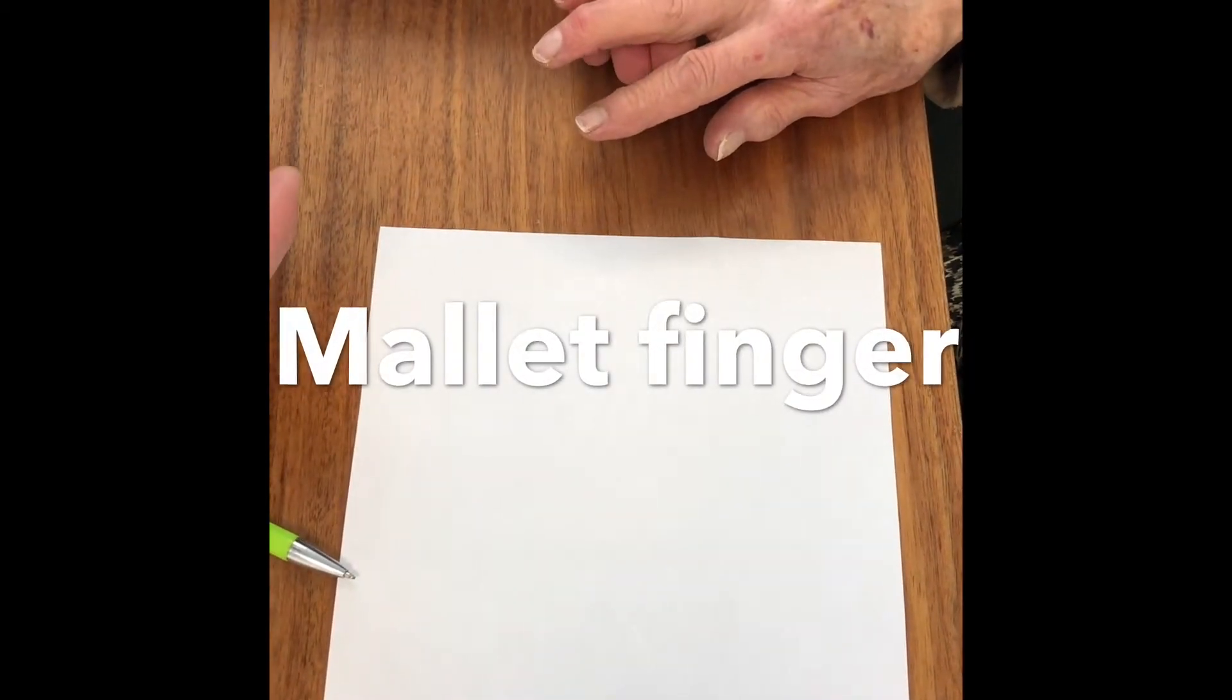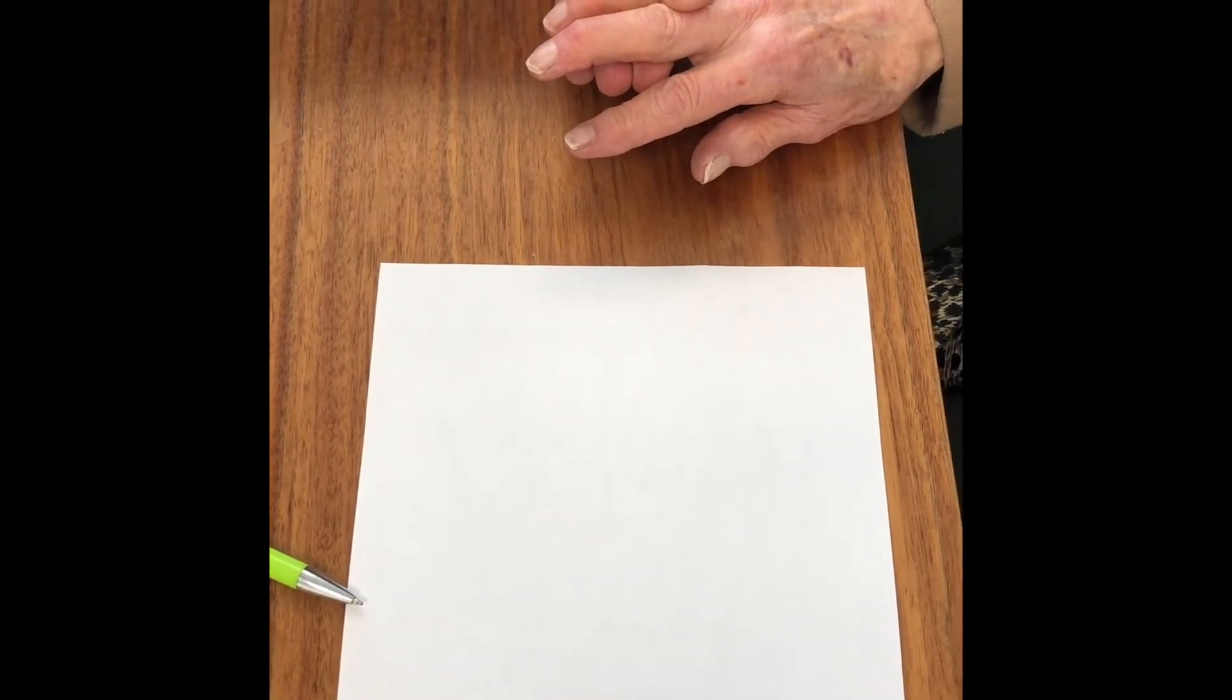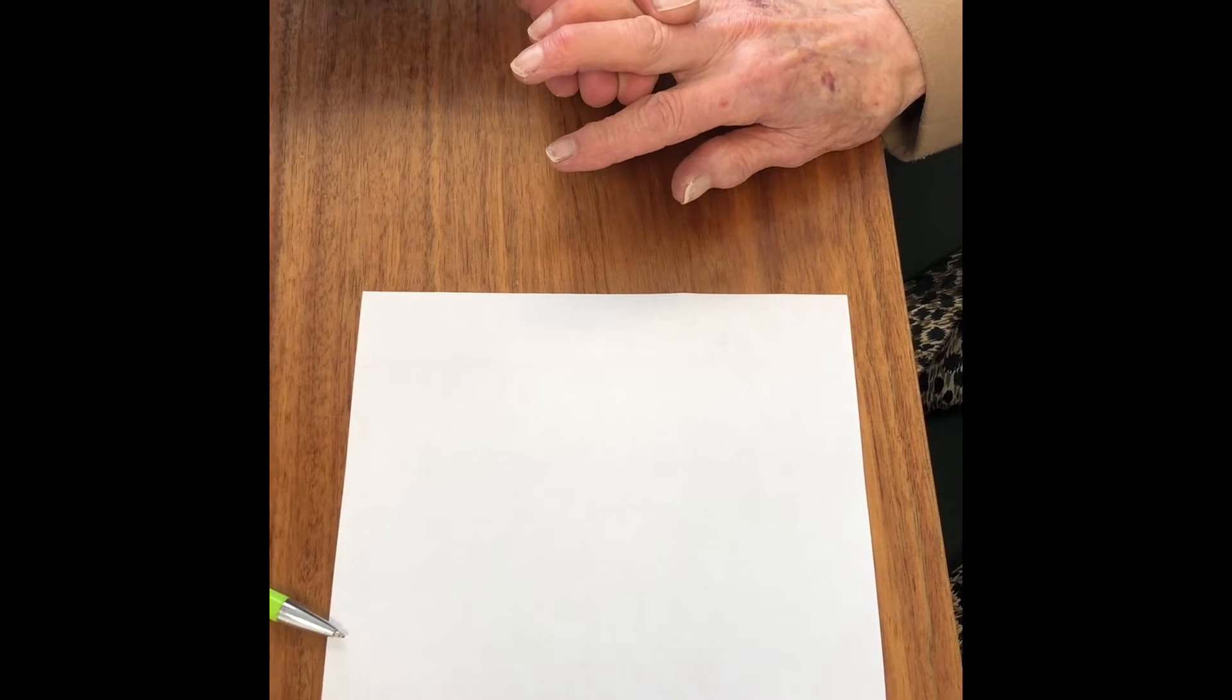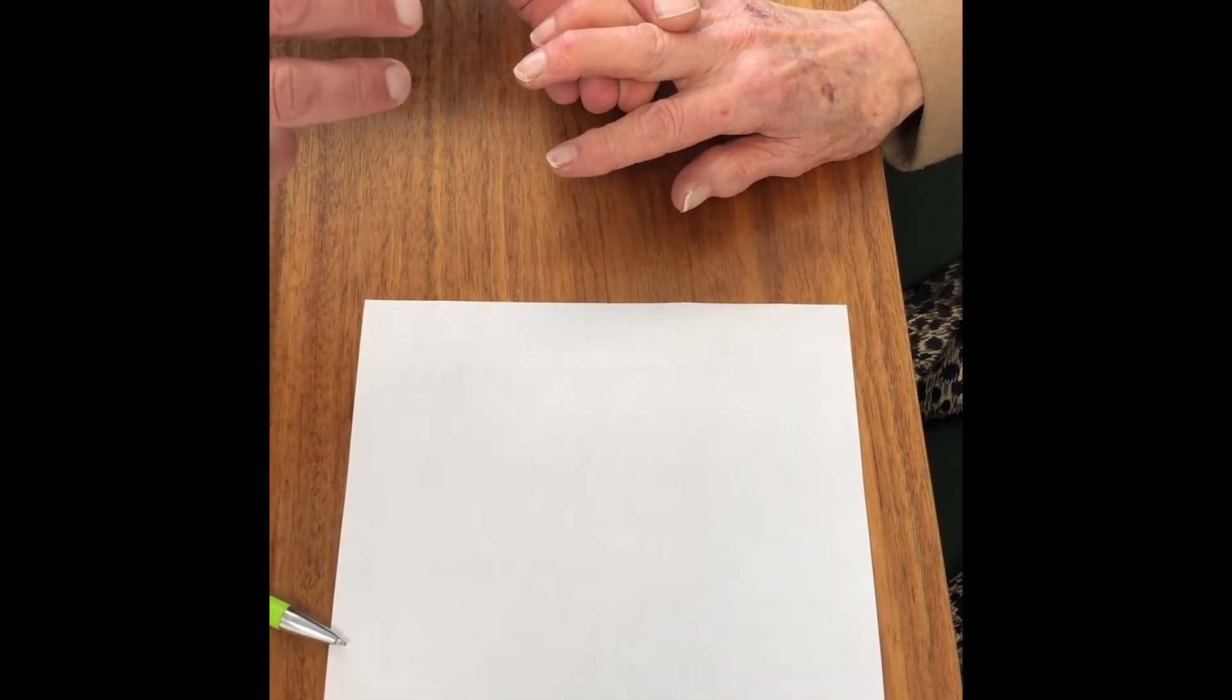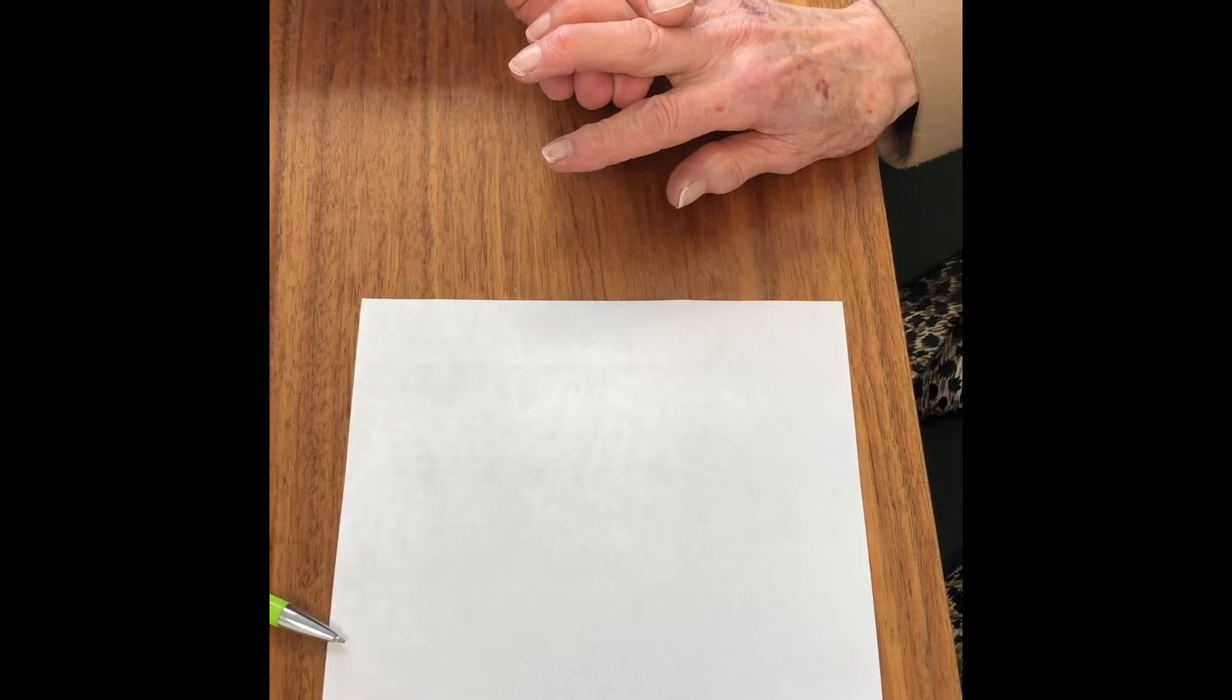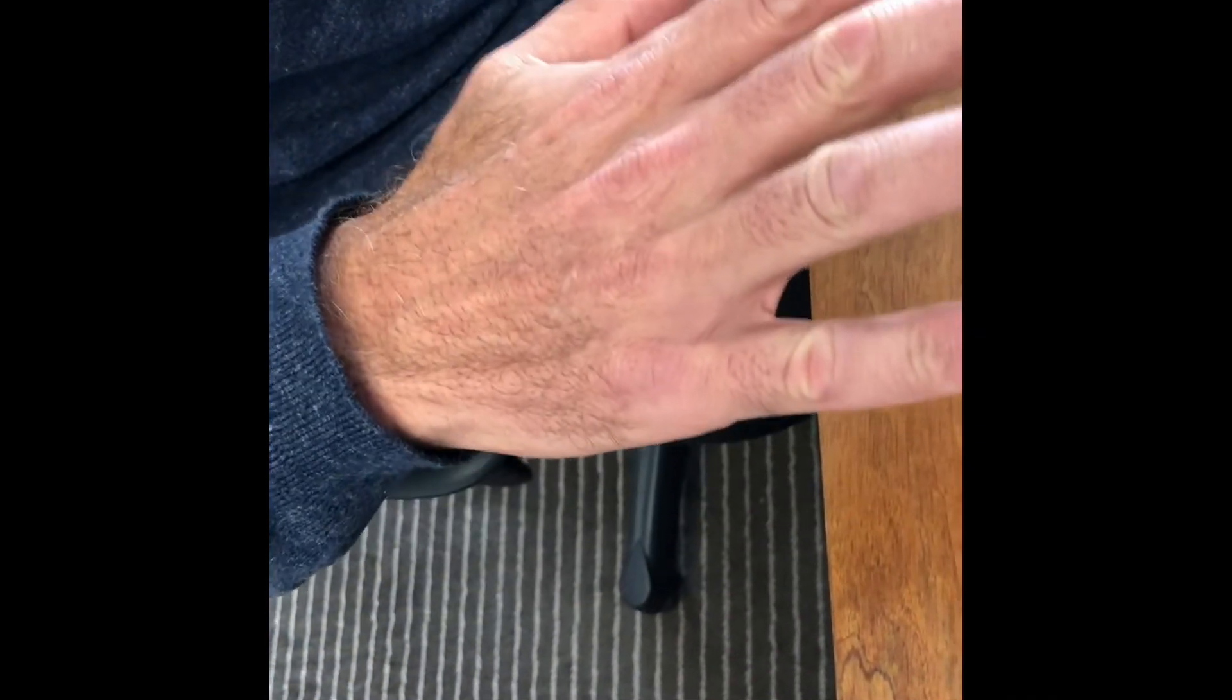This is the hand of a 77-year-old lady who, unfortunately, three weeks ago sustained a forced flexion injury to the right middle and ring finger. She dropped something and then lifted her hand forcibly, clipping the edge of a granite surface and forcing the fingers into flexion from an extended position.